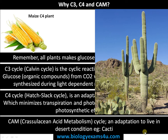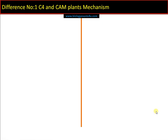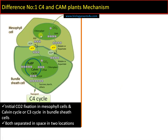Difference number one: the mechanism of C4 and CAM plants. In C4 plants, carbon dioxide combines with phosphoenolpyruvate in the presence of enzyme PEP carboxylase, forming oxaloacetate — a four-carbon compound, which is why it is called C4 cycle. This occurs in the mesophyll cell. This is the initial carbon dioxide fixation. That is then converted to malate and transported to bundle sheath cells.